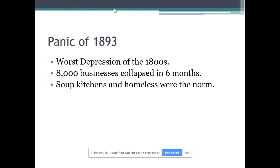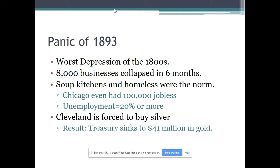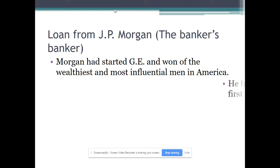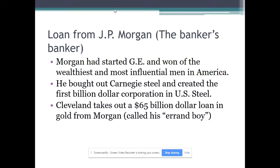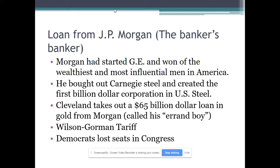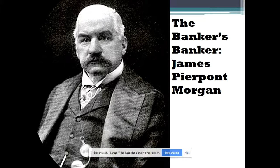Cleveland was still forced to buy silver and took out a loan from J.P. Morgan. One of the things Morgan also did in that decade is he bought out Carnegie Steel and created the first billion-dollar corporation with U.S. Steel. Here is James Pierpont Morgan — one of the few pictures of him. He had a skin problem on his nose, and this image has been doctored up because he hated having his picture taken. He was actually pretty private and rather shy in public, which is hard to believe considering he was probably the most powerful banking man in American history.